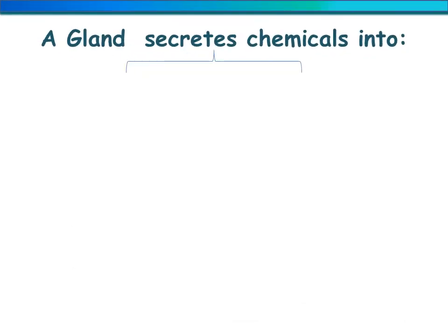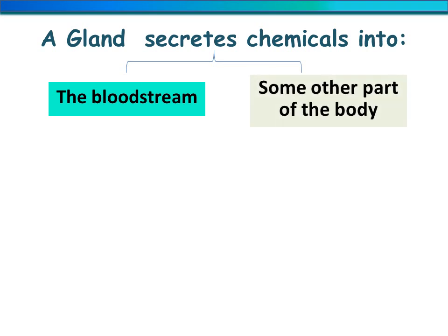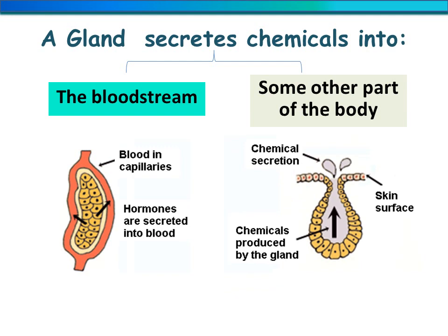A gland secretes chemicals in two ways. First way: into the bloodstream. Second way: into some other parts of the body. As shown in this figure, some glands secrete substances into the blood — these substances are called hormones — and other glands secrete substances to other parts of the body.